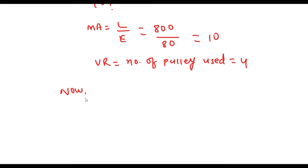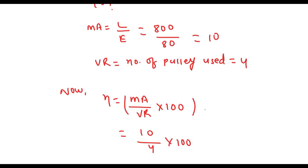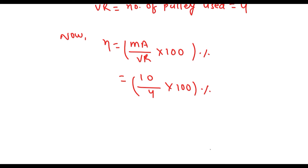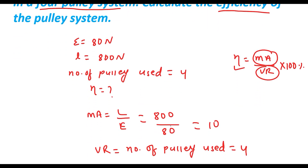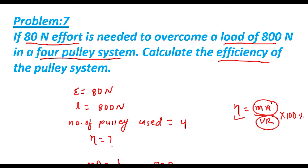In a pulley system, velocity ratio is always given by the number of pulleys used — this is an important point to remember. So VR equals number of pulleys used. Let us move to Problem 8.